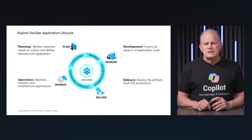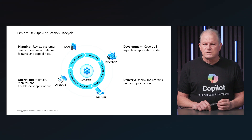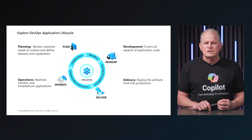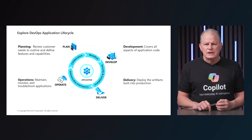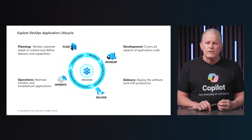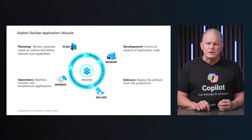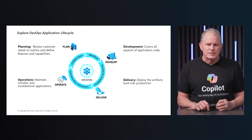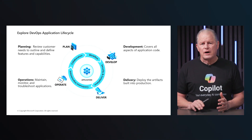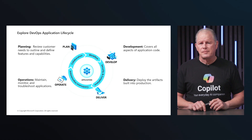The development phase emphasizes the importance of using a source control system to facilitate collaboration and support versioning. This ensures that code changes can be tracked and that multiple team members can work on the code simultaneously without conflict. Delivery is the process of deploying the artifacts built during the development stage into the production environments in a consistent and reliable manner.